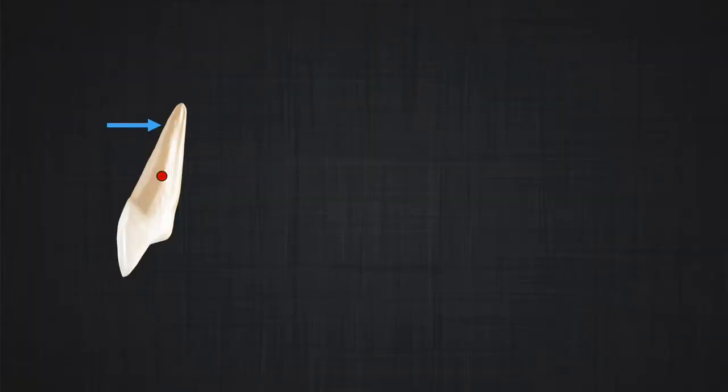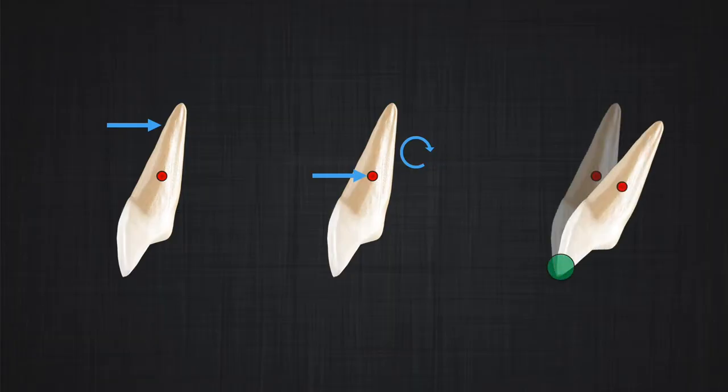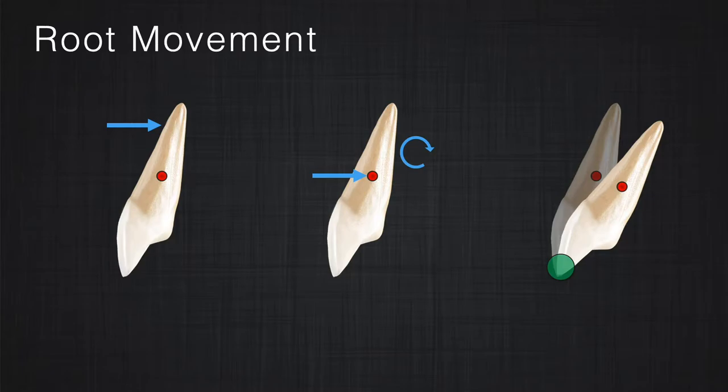What happens if we apply a force at the level of the root? In this example, if you draw the equivalent system, you will see the magnitude of the force is the same, therefore you are expecting the same displacement. However, the moment that is produced in the system is in the opposite direction — it is large, but it is in the opposite direction. So that will produce a type of tooth movement that we call root movement. It seems that the center of rotation of the tooth is somewhere close to the incisal edge.